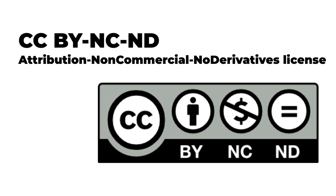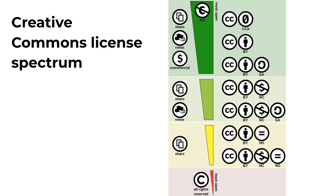The Attribution Non-Commercial No Derivatives License, or BY-NC-ND, allows people to use the unadapted work for non-commercial purposes only, as long as they give attribution to the creator. This is the most restrictive license offered by Creative Commons. Here is a graphic that places the CC public domain dedication and the six CC licenses on a spectrum from least restrictive to most restrictive, with the all rights reserved of copyright being most restrictive of all. We'll discuss the public domain in a moment.